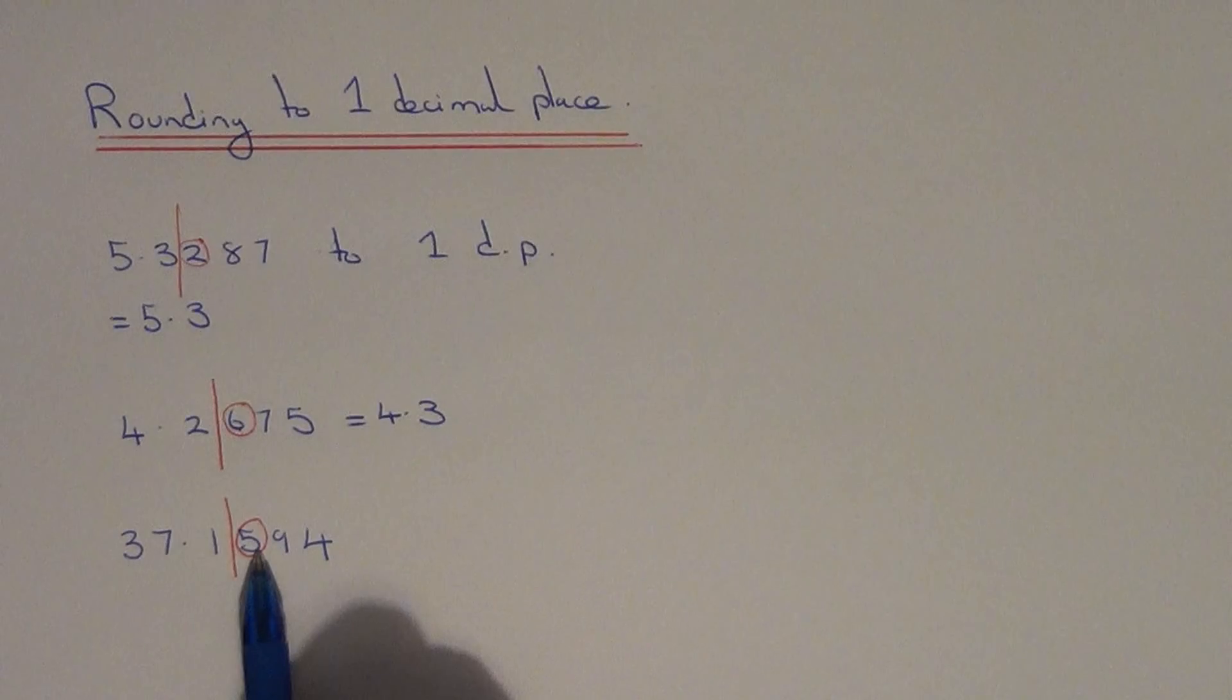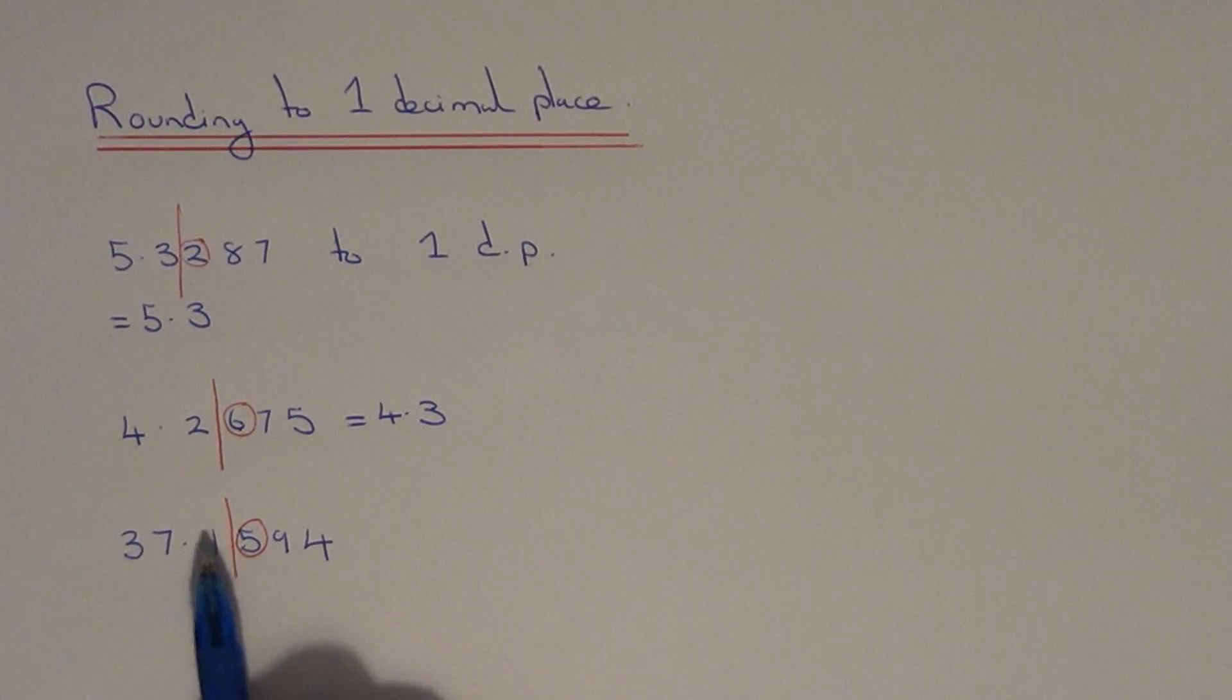If that number is 5 or above, you round it up. If it's less than 5, you round it down. This is exactly 5, so it's 5 or above. We round it up to 37.2.